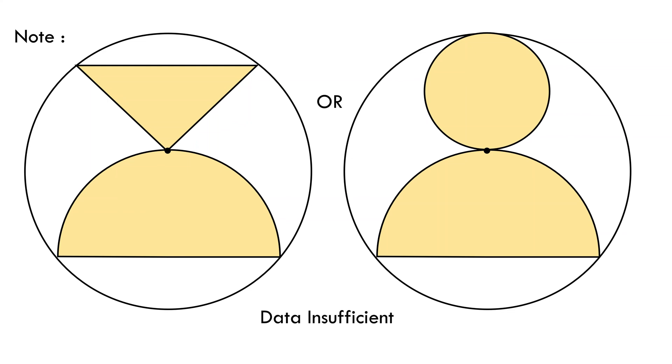In that case, we would need at least an extra information in the question, e.g., the height at which the semicircle and the triangle or circle intersect, or other details.